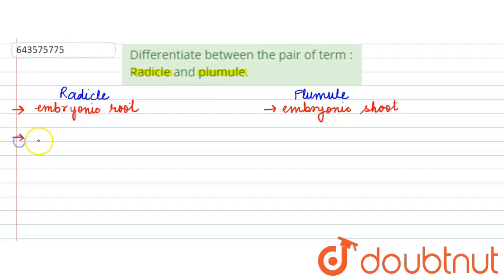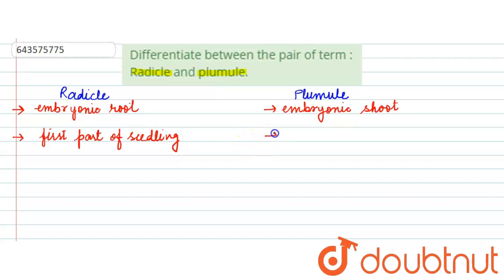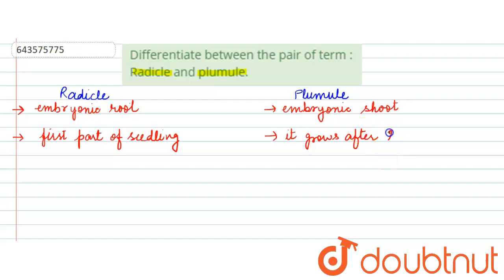Moving towards the second point of difference: radicle is the first part of the seedling. So your radicle becomes the first part of your seedling, whereas the plumule only grows after the radicle. Once the radicle has grown, then only the plumule will start to grow.